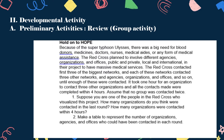Because of the Super Typhoon Ulysses, there was a big need for blood donors, medicines, doctors, nurses, medical aides, or any form of medical assistance. The Red Cross planned to involve the different agencies, organizations, and offices, public and private, local and international, in their project to have massive medical services. The Red Cross contacted the first three of the biggest networks, and each of these networks contacted three other networks, agencies, organizations, and offices, and so on, until enough were contacted. It took one hour for an organization to contact three other organizations, and all contacts were completed within four hours. Assume that no group was contacted twice.